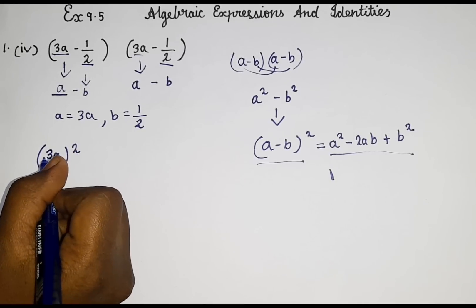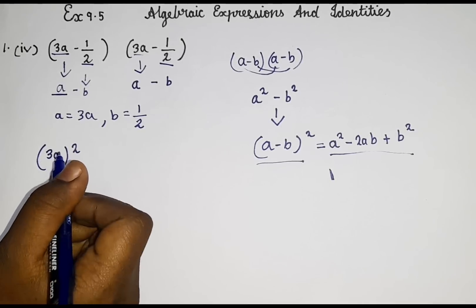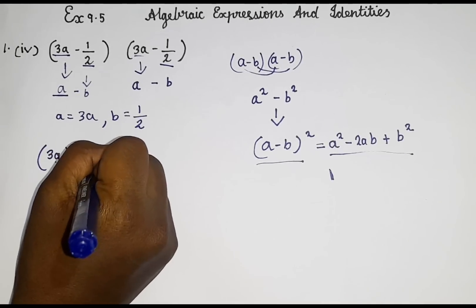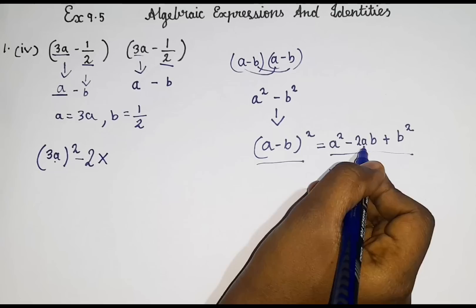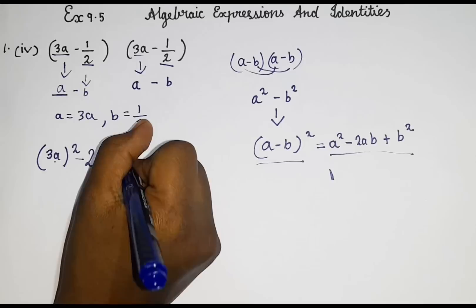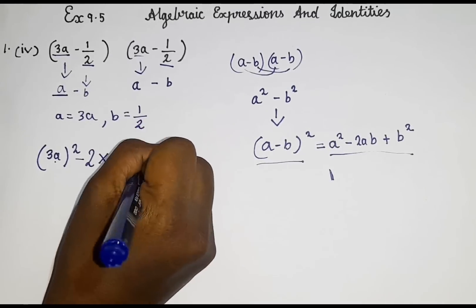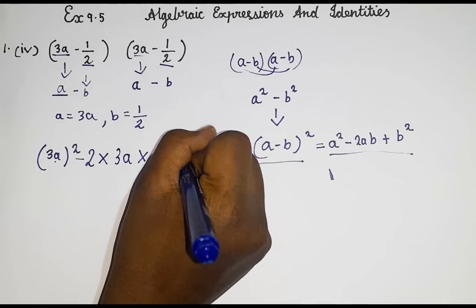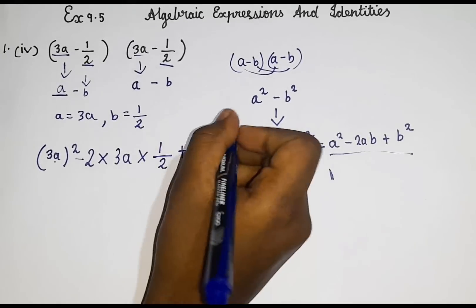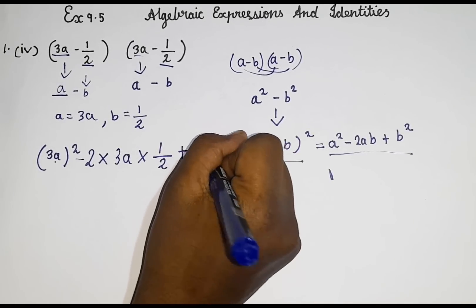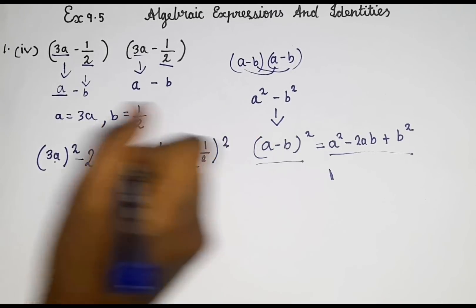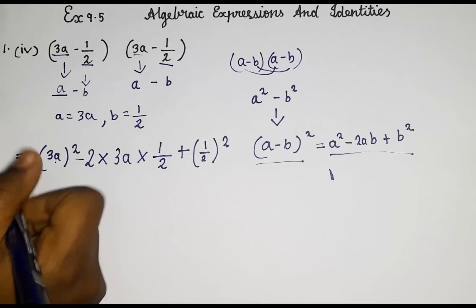Because the square belongs to 3 as well as a. So next minus sign then 2 into ab. ab means a into b. So a is 3a. Then b is 1 by 2. Then plus. Plus b square. b square means here b is 1 by 2. So 1 by 2 the whole square. So now we will solve it.